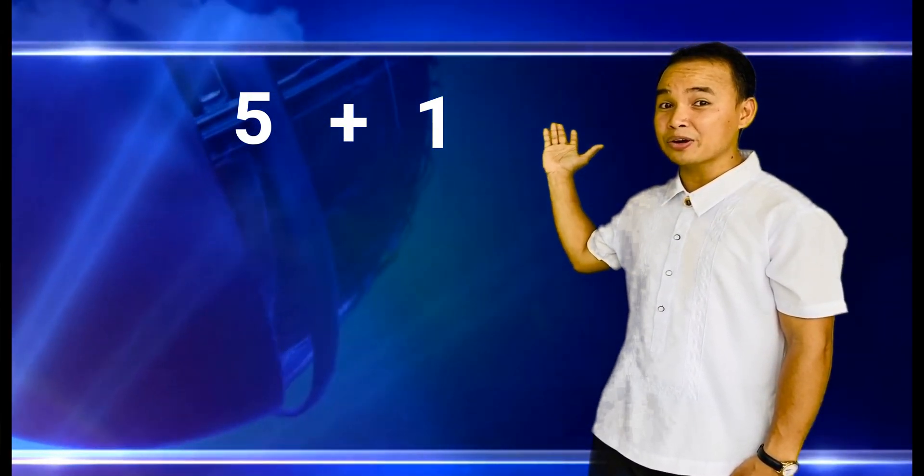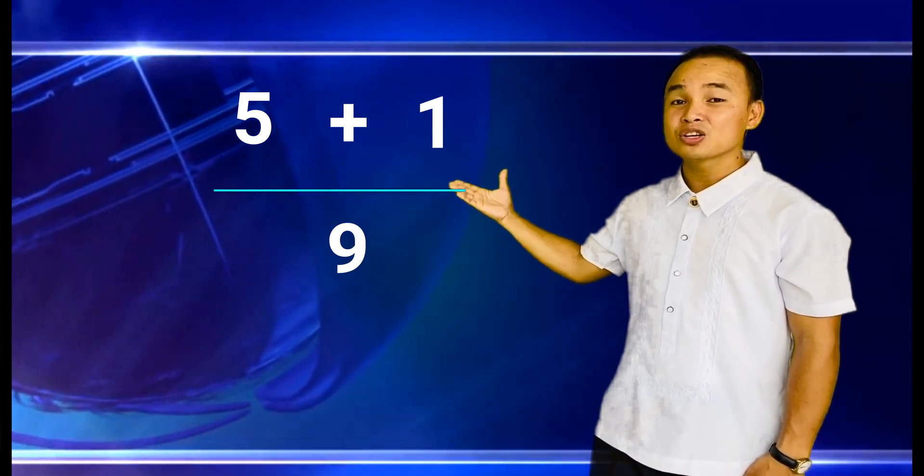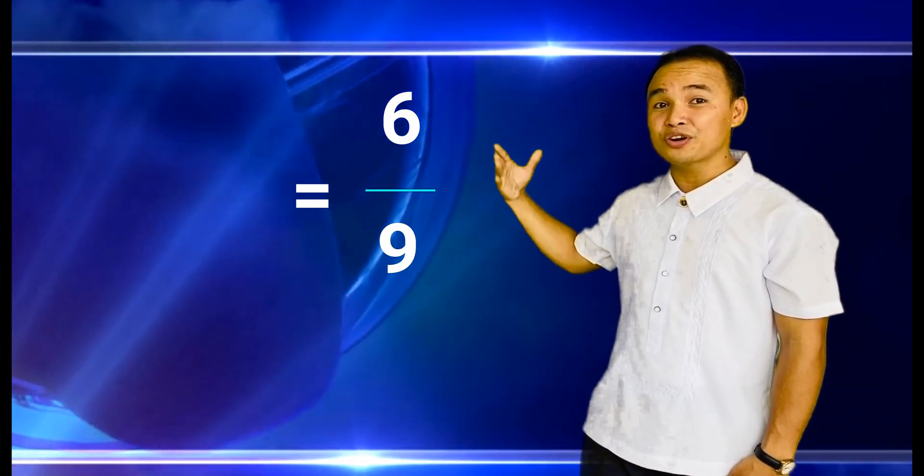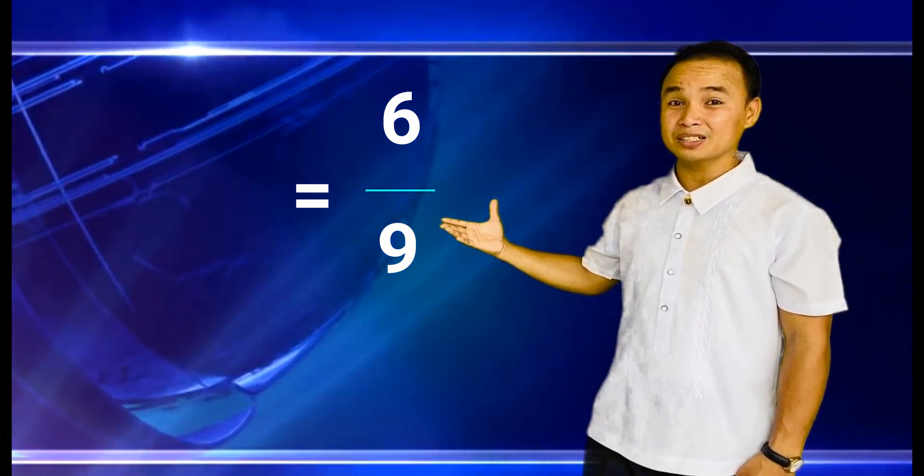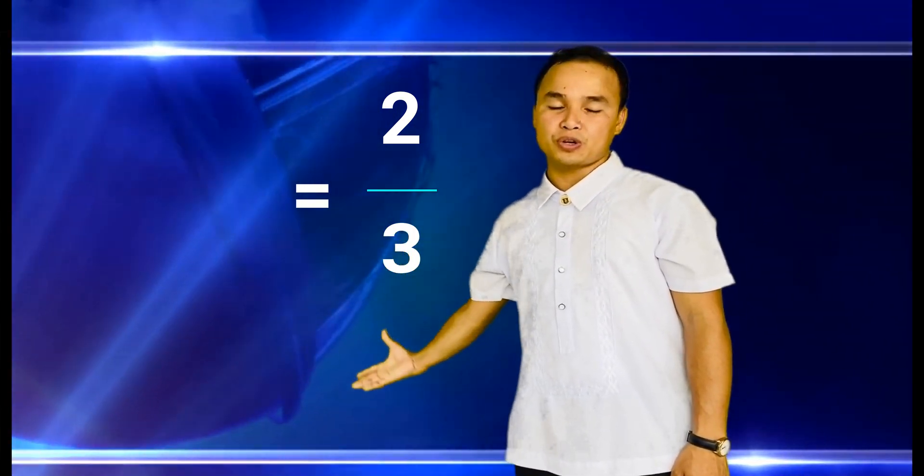So we have 5 plus 1, the numerators, over 9, the common denominators. So we get 6 over 9. We simplify it. It becomes 2 over 3 or 2 thirds. So the answer is 2 thirds.